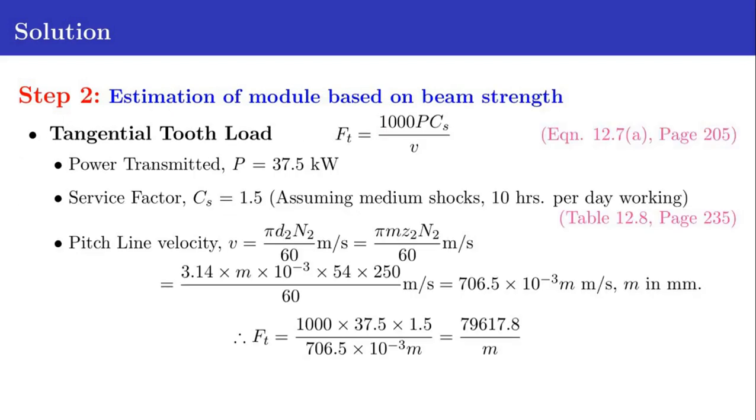The next step is to find out the module based on beam strength. First we calculate the tangential tooth load, then we equate this tangential tooth load with the tangential tooth load obtained from the Lewis equation. FT equals 1000 P CS divided by V, equation 12.7A in page 205. P is the power transmitted, 37.5 kilowatts. CS is the service factor, we assume 1.5 assuming medium shocks and 10 hours per day working, from table 12.8 in page 205. V is the pitch line velocity.